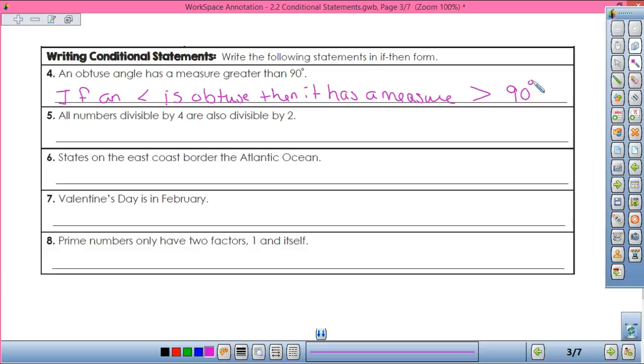Okay. So all numbers divisible by four are also divisible by two. Who wants it? If a number is divisible by four, then, make sure you have if and then, it is also divisible by two.